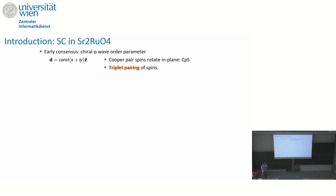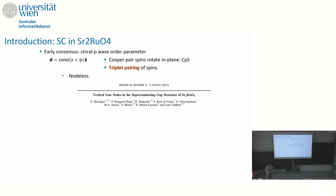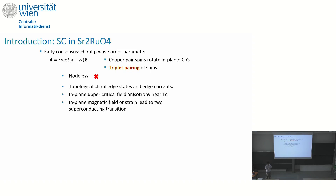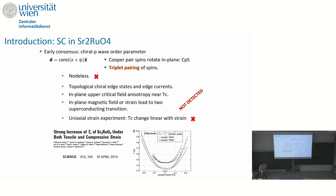The early consensus was a chiral p-wave order parameter, where the Cooper pair spins rotate in-plane, forming triplet pairing. There were very nice theoretical stories about manipulating this triplet pairing system. However, a few theoretical expectations were denied by experiment, and signatures expected from spin-flip triplet pairing were never detected.